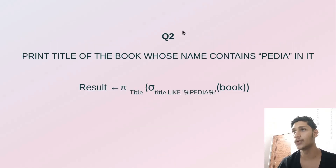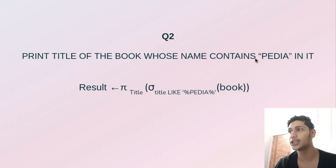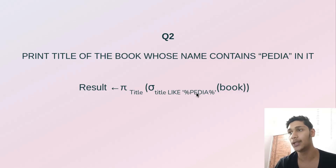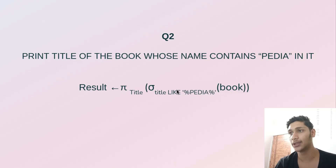In the second problem, print the title of the book whose name contains 'pdia' in it. We select all titles which are LIKE 'pdia', meaning which have the word 'pdia' either at the beginning, in the middle, or at the end. The percent signs indicate any length of characters before and after, and we select all matching entries from book.